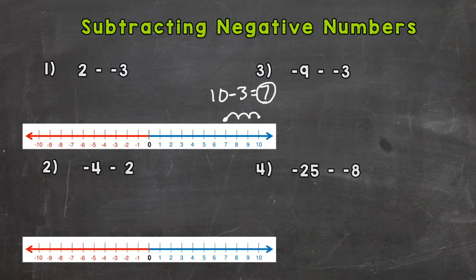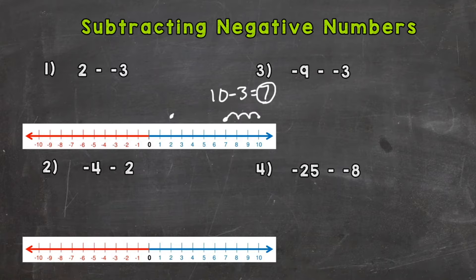Now when we're working with negative numbers, they actually tell us the opposite. So if we do two minus negative three, we start at two and we're going to take away negative three. That negative tells us to do the opposite, so we're not going to go backwards on the number line — we're actually going to go forwards: one, two, three, and we end at positive five.